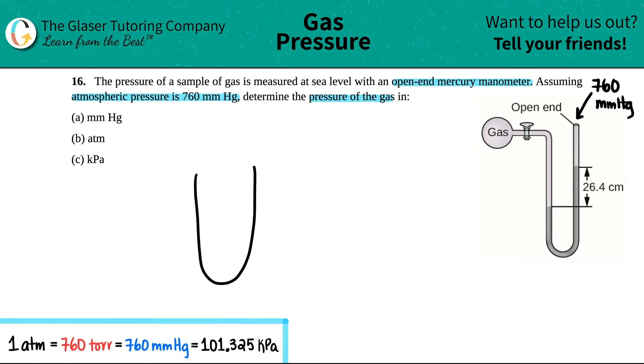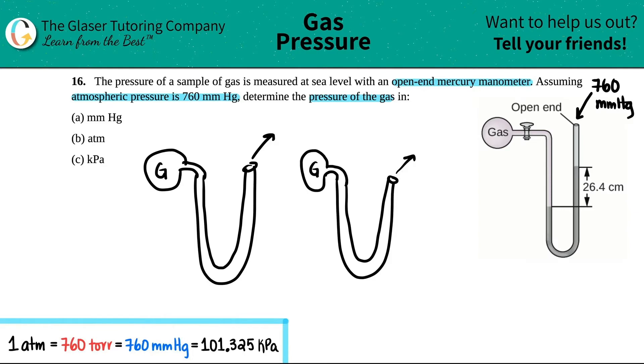Now, there are two different types of open-ended manometers that you can see. And what I'm trying to draw is just this little piece right here. So one end on the right-hand side is going to be open to the atmosphere, just like in our little picture. And then the other side is going to be with the gas, G for gas.